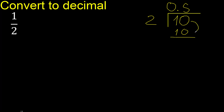10 minus 10 is 0. Finish, because here there is no number that goes down.